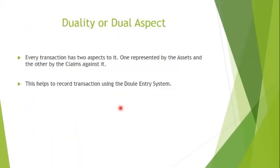Next is duality, or the dual aspect concept. We have seen this one already and know how to use it. Every transaction has two aspects — it affects two items in our financial statements. One is represented by the assets and the other by the claims against it. This helps us to record transactions using the double entry system.